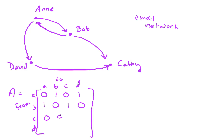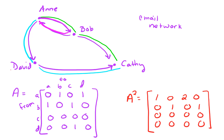Kathy sends no emails, and David only sends an email to Kathy. I fast-forwarded some of the calculations to square the matrix. I want to talk about what this matrix gives us. Notice that in the row for Ann, column for Kathy, there are two paths of length 2. We have a path from Ann via David to Kathy, and then we also have a path from Ann via Bob to Kathy.